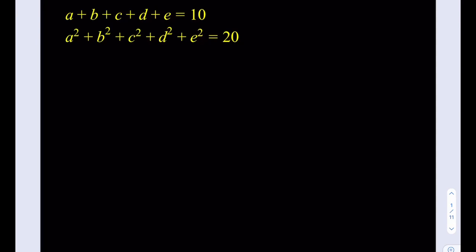Well, here's what we're going to do. I'm going to exclude the e from this equation and just focus on a, b, c, d. So what type of inequality can we use? We can use the Cauchy-Schwarz.